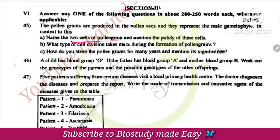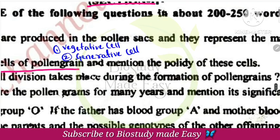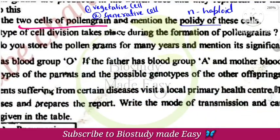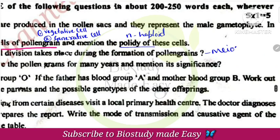Now, two cells of pollen grain: one is the vegetative cell and the other is the generative cell. These are the two cells of pollen grains. They are haploid. What type of cell division takes place during formation of pollen grains? That is meiosis.